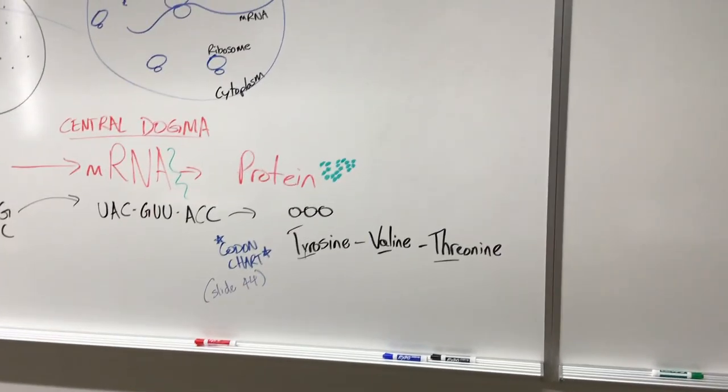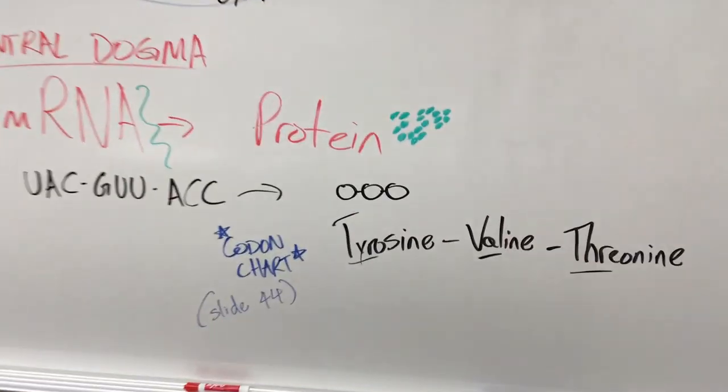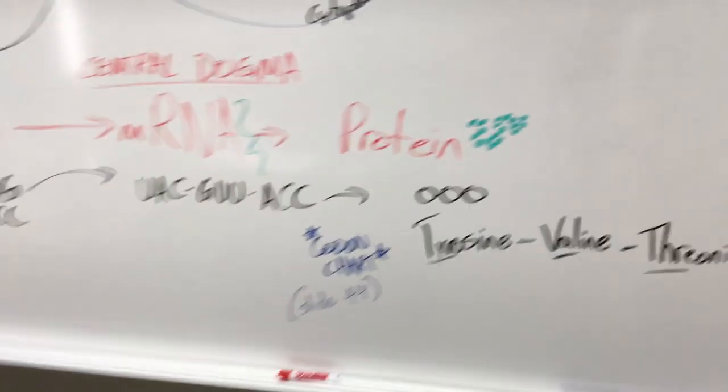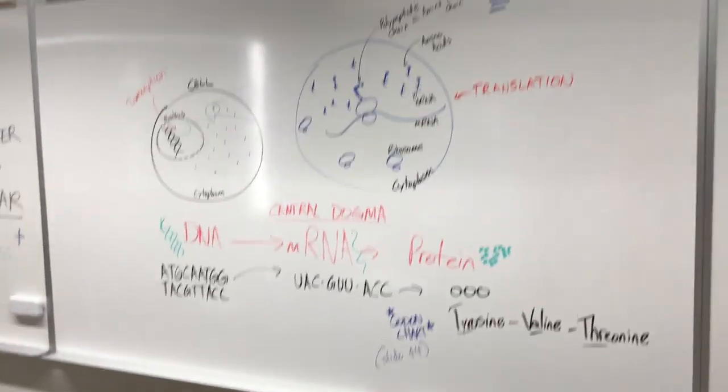tyrosine, valine, threonine. But when we write them down, we generally only use the first three letters of the word. But yeah, there is the rush tutorial of the central dogma.